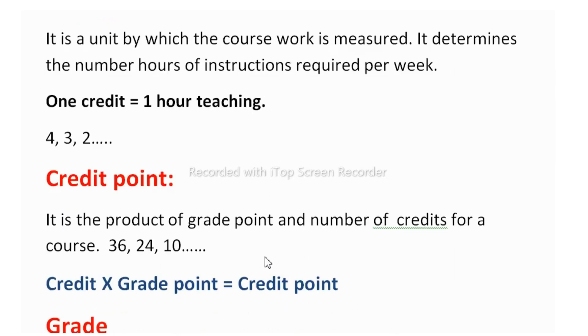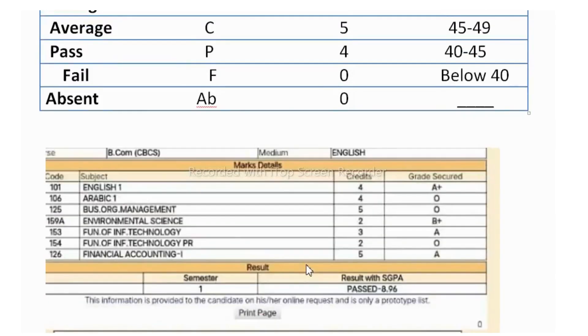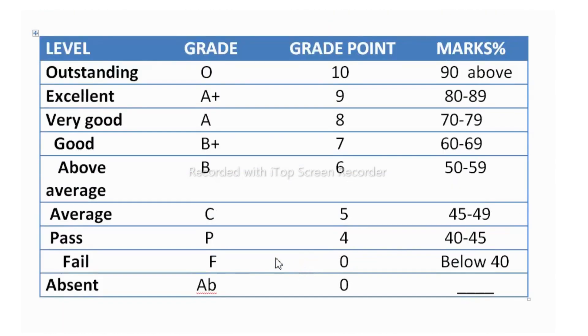Now let's talk about credit points. Credit point is the product of grade point and number of credits for a course. So how we will calculate this 36, 24 and 10, let's see. Before calculating the credit point, we should read this one. We have to read this one.